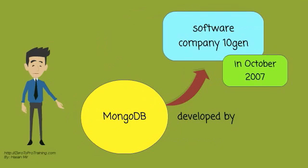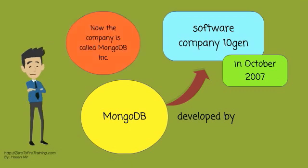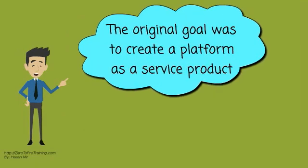It was first developed by the software company 10gen in October 2007. Now the company is called MongoDB Inc. The original goal of the company was to create a platform as a service product.